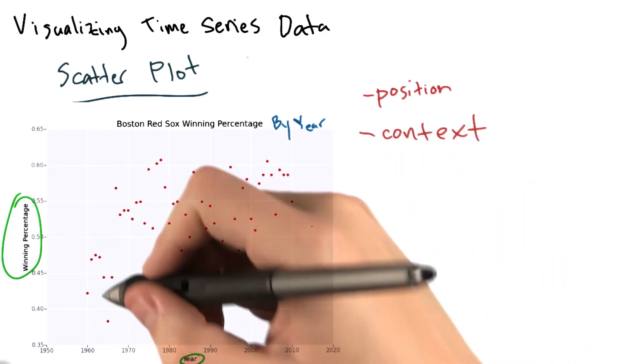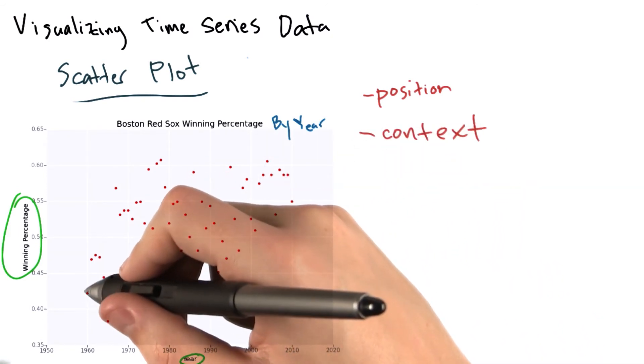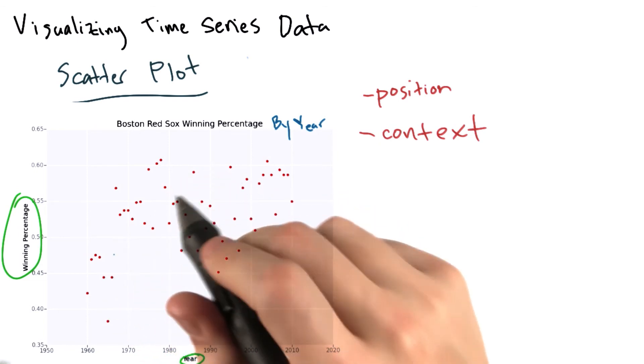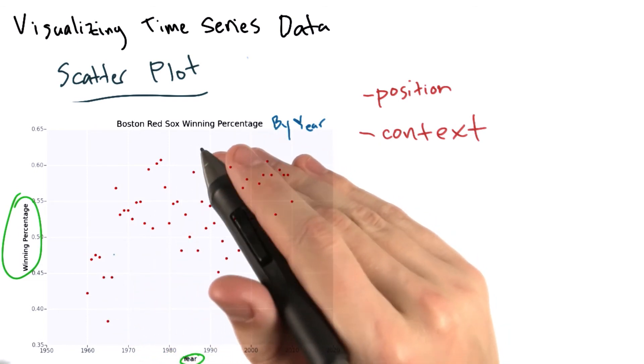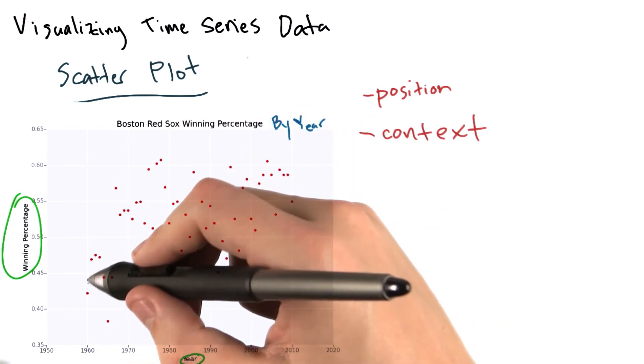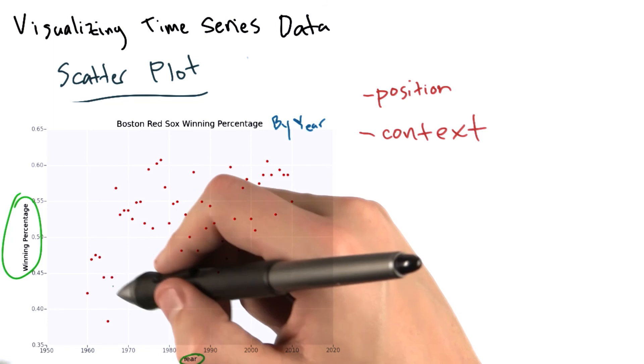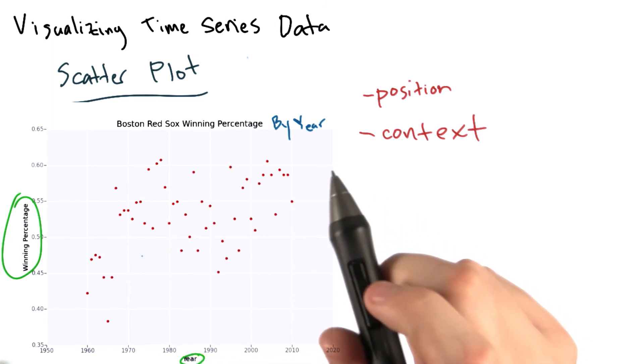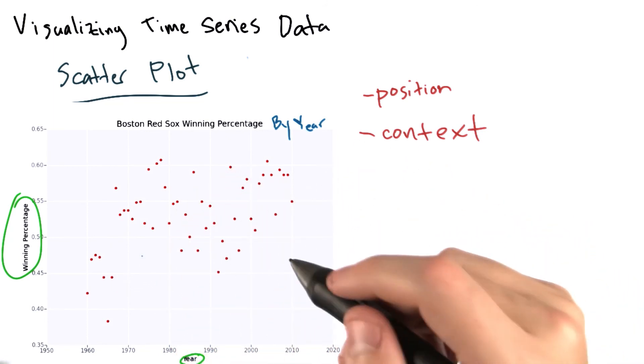But as you can see, a scatter plot here really puts focus on the individual values. It's a little bit hard to discern trends. It can also be hard for a reader to mentally fill in the gaps between the points and understand what's happening from year to year. It's for this reason that we might want to use a line chart.